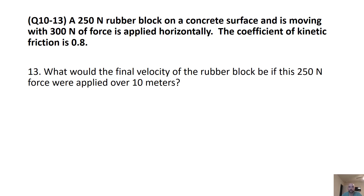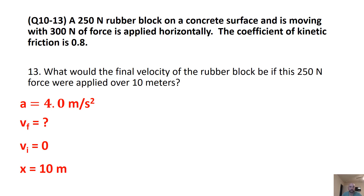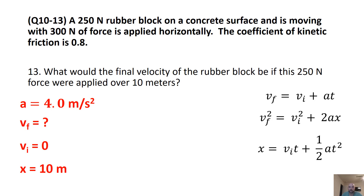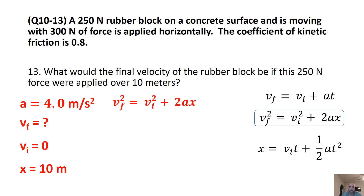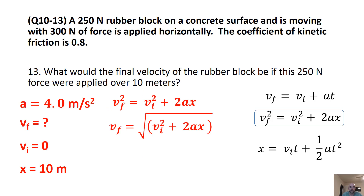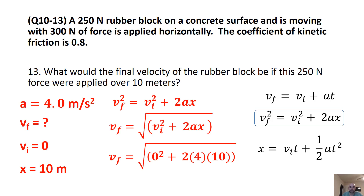This problem starts fresh but uses the same acceleration of 4.0 meters per second squared. It still asks for final velocity starting from rest, but this time the force is applied over 10 meters rather than 1.5 seconds. We look at our 1D motion equations and pick the one with variables A, VF, VI, and X. Rearranging to take the square root, we plug in our values and get a final velocity of 8.94 meters per second.